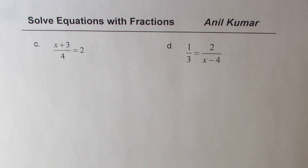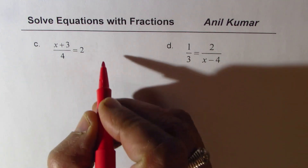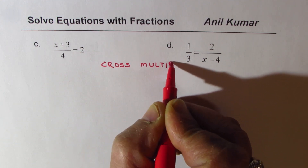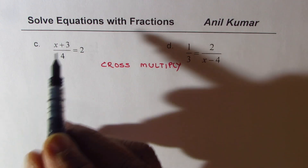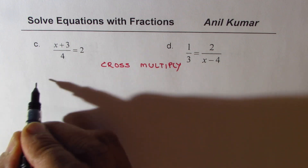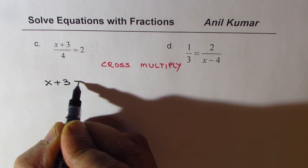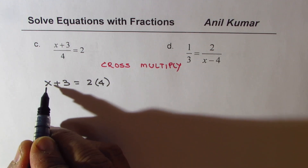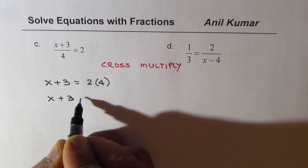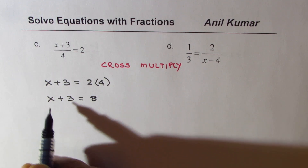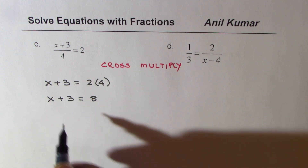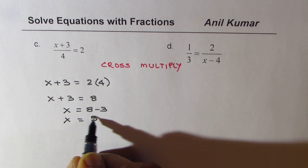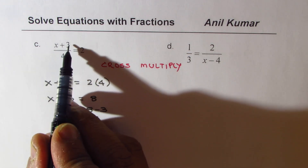The strategy is cross multiply. So multiply 2 by 4: we get X plus 3 equals 2 times 4. Writing it in brackets means multiplication, so X plus 3 equals 8. To get X, take away 3 from both sides: X equals 8 minus 3, so X equals 5. You can check: 5 plus 3 is 8, and 8 divided by 4 is indeed 2.